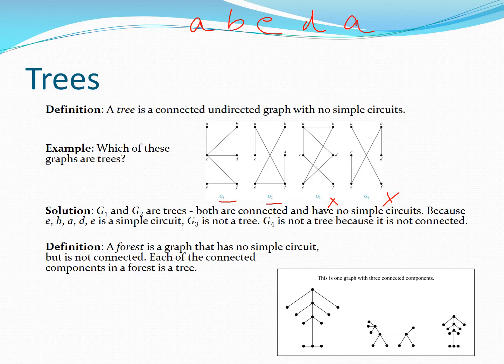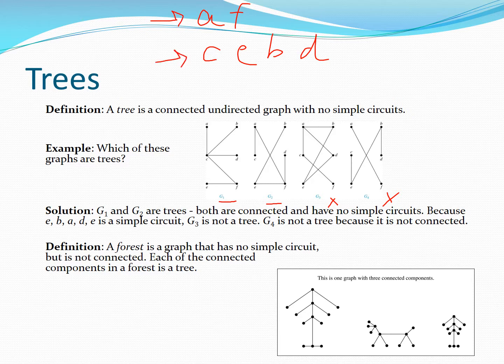G4 cannot be a tree either. Starting at a, you can only go to f — that's one connected component. The other component starts at c, goes to e, b, and d. These two components are disconnected; you cannot go from a to any of those vertices. So g4 has two connected components, and for a graph to be a tree all vertices must be connected.